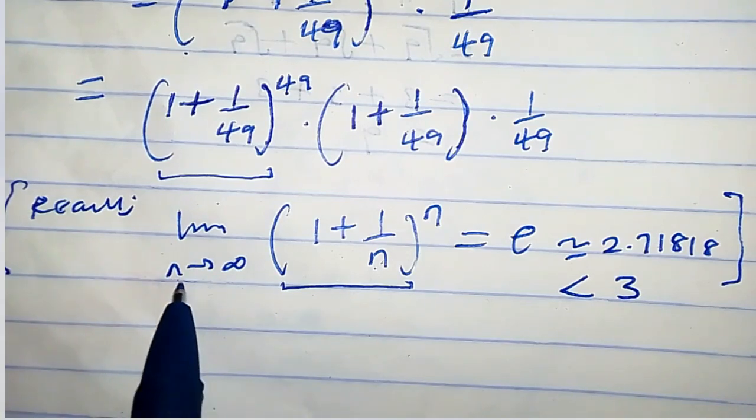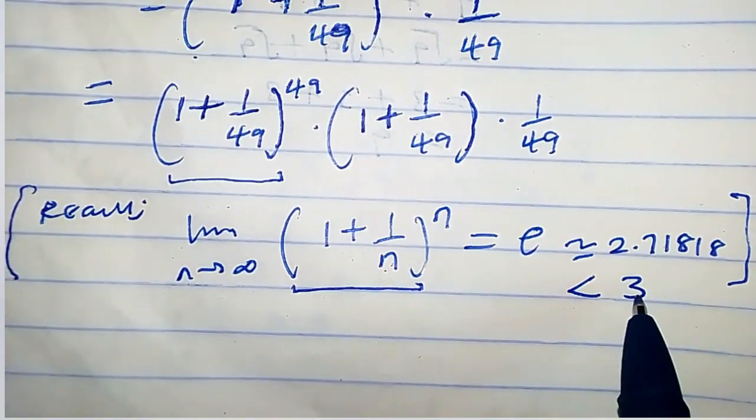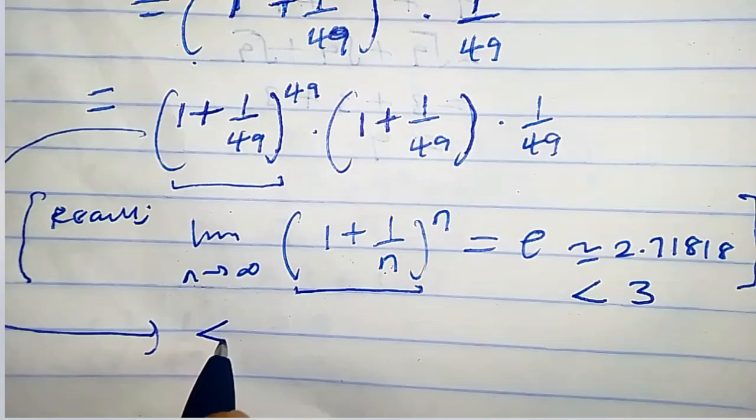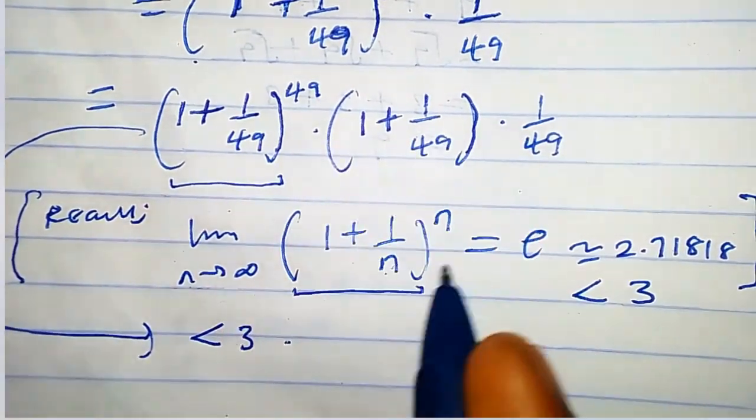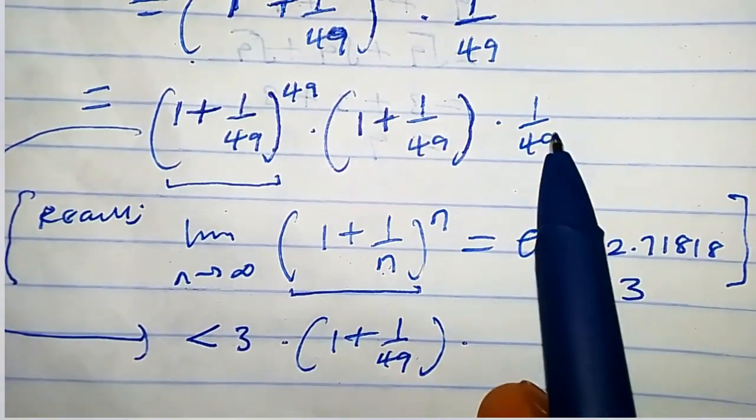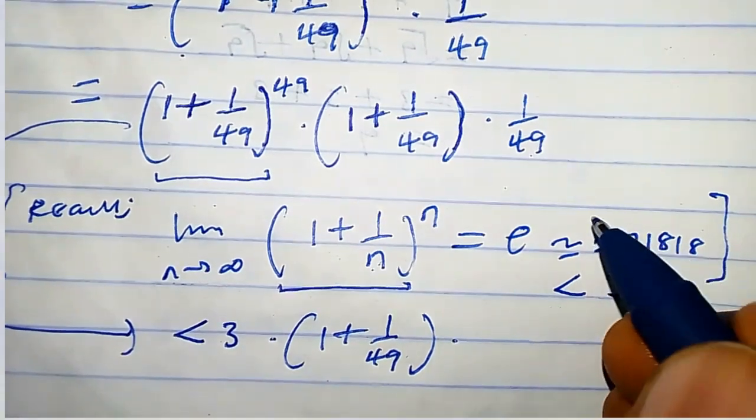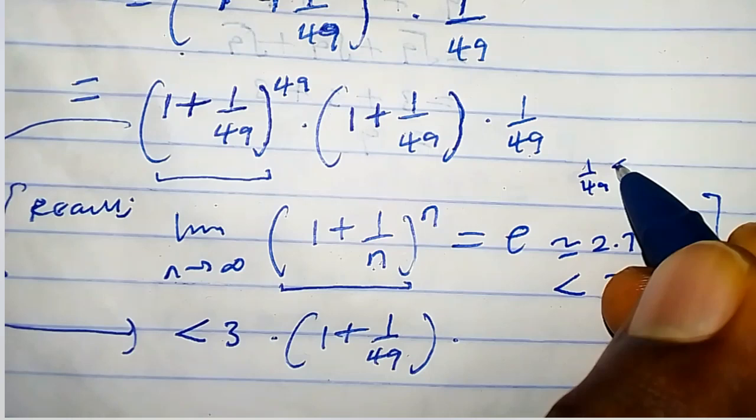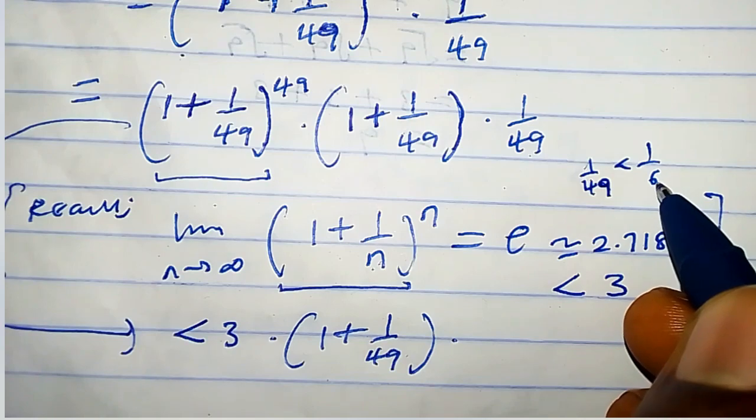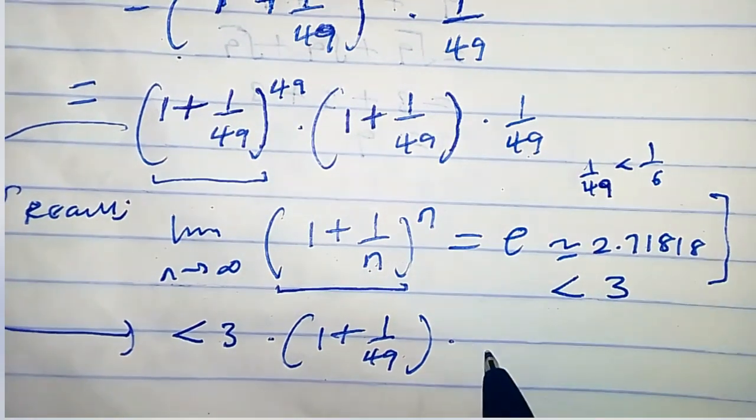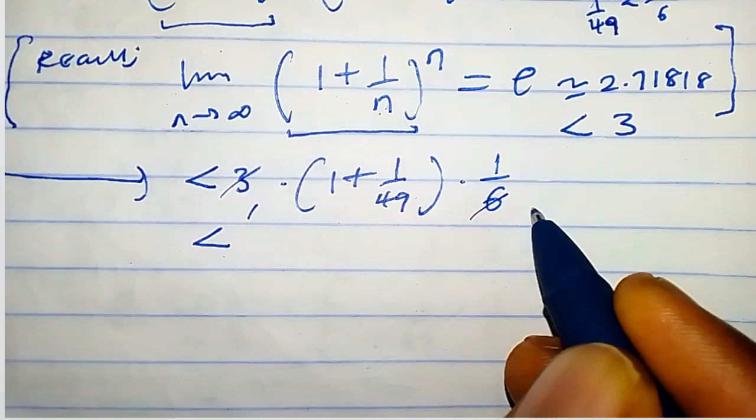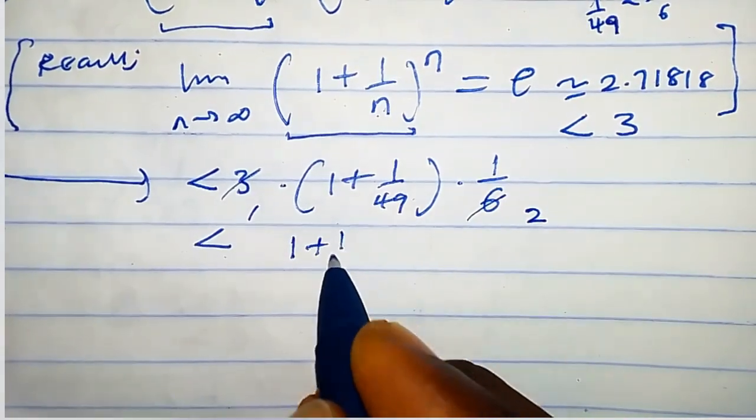That means that for any value of n, this whole expression will be less than 3. So from here, since our n is 49, this will be less than 3 times (1 plus 1 over 49) times 1 over 49. Now consider 1 over 49, which is less than 1 over 6, because 49 is greater than 6. So we can replace this, and we have less than 3 times 1 over 6, that is 1 over 2, times (1 plus 1 over 49).